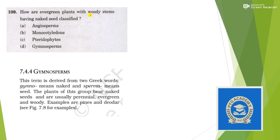Next: how are evergreen plants with woody stems having naked seeds classified? Very simple question — naked means 'gymno' and seed means 'sperma', so the answer should be gymnosperms.